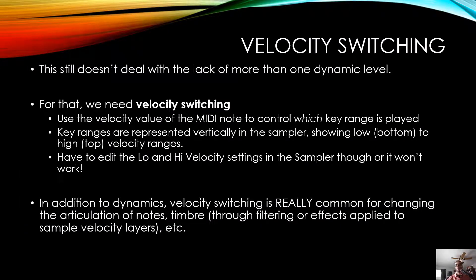One problem though is that this still doesn't deal with the lack of only one dynamic level. For that, we need what's called velocity switching, where we use the velocity of the incoming MIDI note to control which key range is played, by adding an additional key range above the previous stack of samples. Key ranges going vertically lower will be a lower velocity, and higher will be higher velocity. You can have any number of these — it's very common to have three or more. You have to edit the low and high velocity settings for every sample, otherwise it won't work — you'll only get whatever is properly set, and everything else will be quiet.